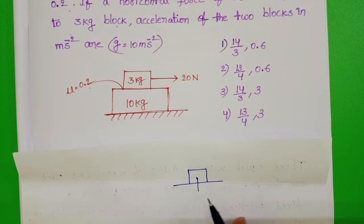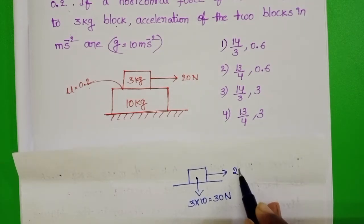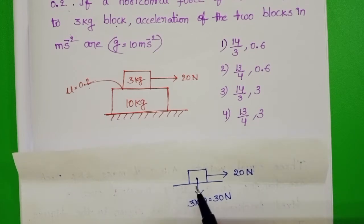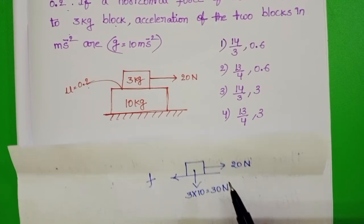Weight of this block acting in downward direction is 3 into 10, that equals 30 N. External force is 20 N. And here, when this block is pulled in forward direction, frictional force exists in backward direction.